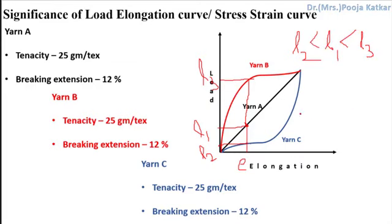What does this mean? Though these three yarns show the same final tenacity and breaking extension values, the inherent behavior of the material is quite different. Yarn C is more extensible during initial phases. Comparatively, Yarn B shows lower extensibility in initial stages. Based on these inherent characteristics of the material, I can decide its end application.